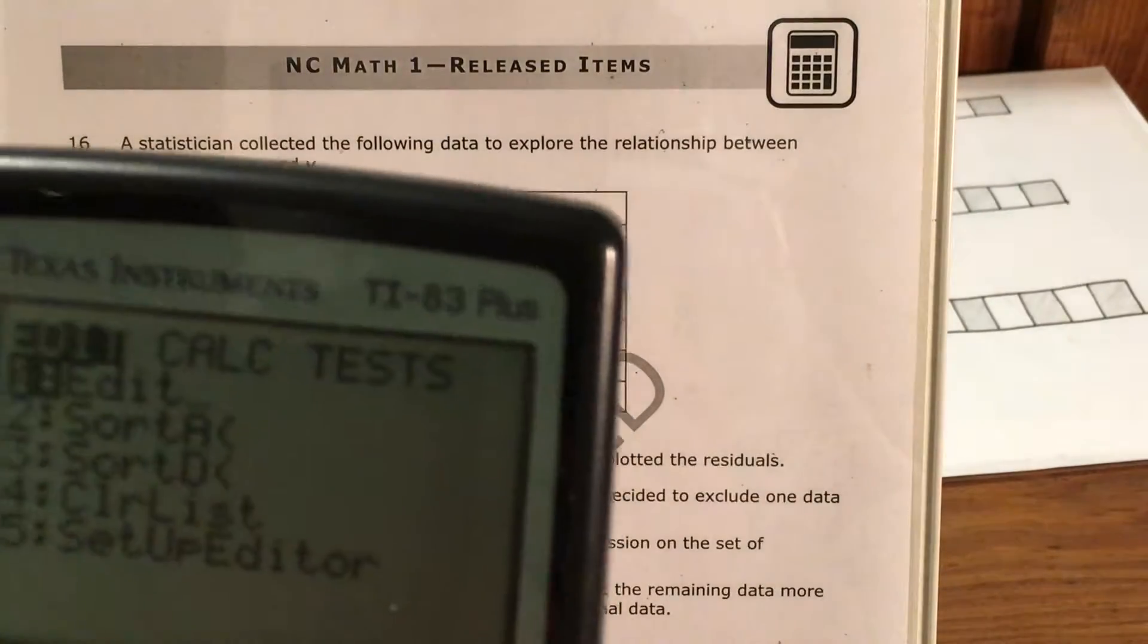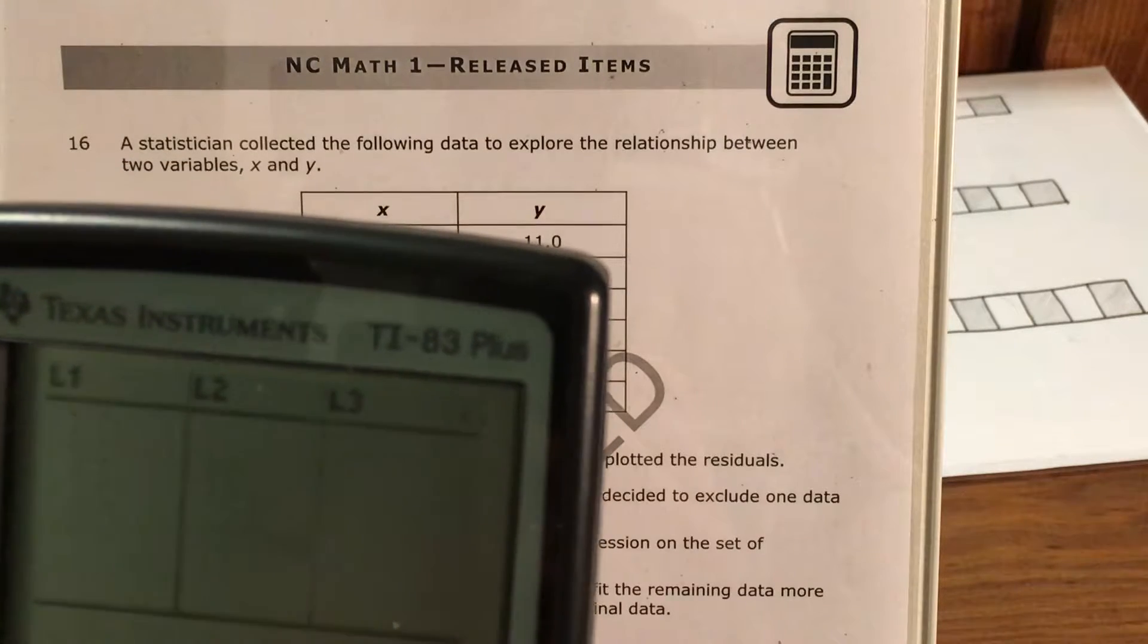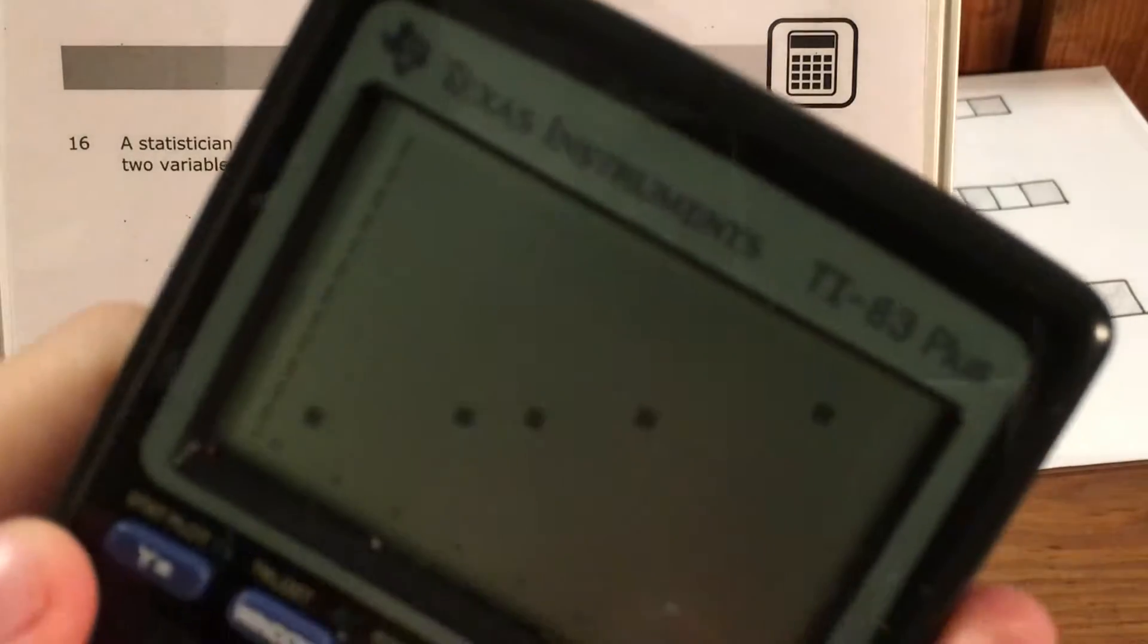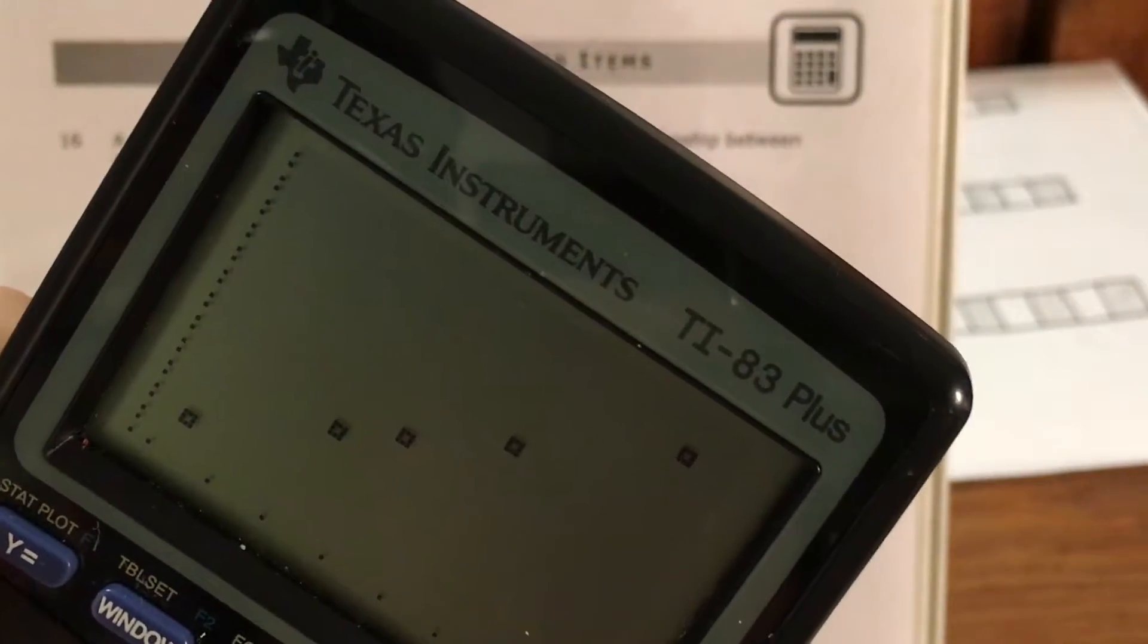Now if I were to go back to this menu and delete 8.2 and delete 24.3, now all five of my points look like they're on a much closer line.